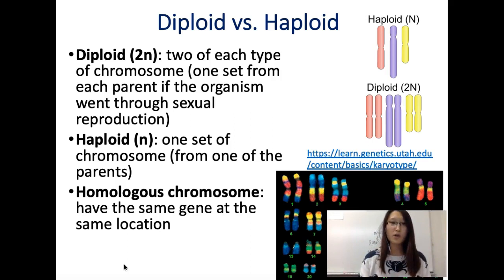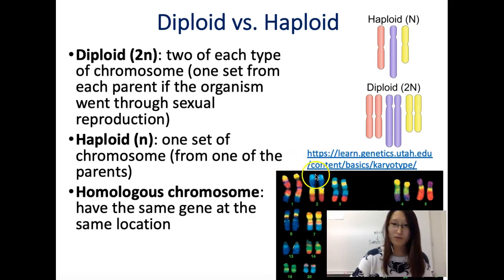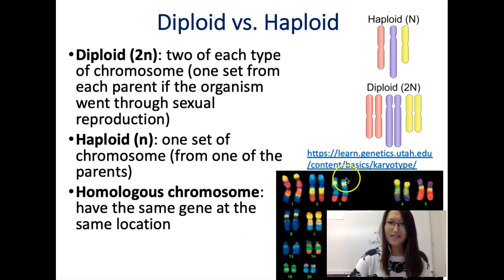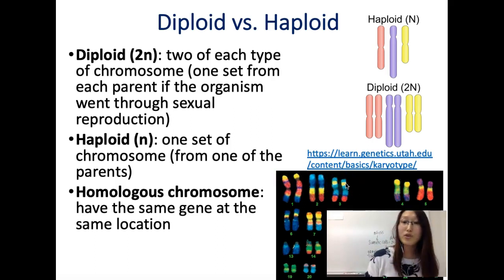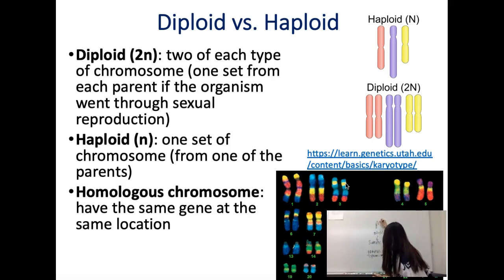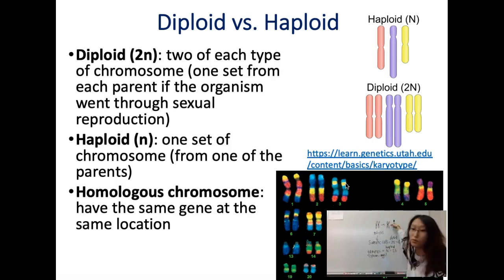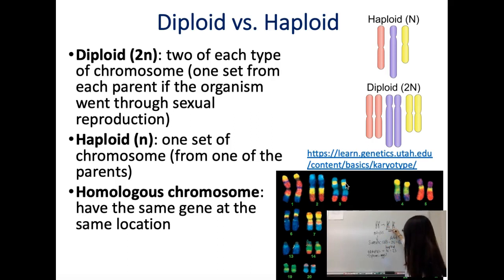A new term: homologous chromosomes. These have the same genes at the same locations. A more scientific way of saying 'one pair of chromosomes' is homologous chromosomes. There are two ways to draw homologous chromosomes: if we have unduplicated chromosomes, you draw two single rods as one pair; if we have duplicated chromosomes, each chromosome looks like an X shape, and two duplicated chromosomes together are still homologous.